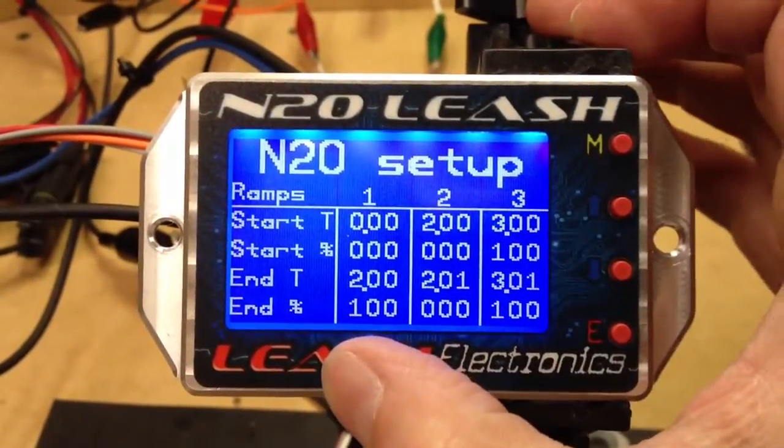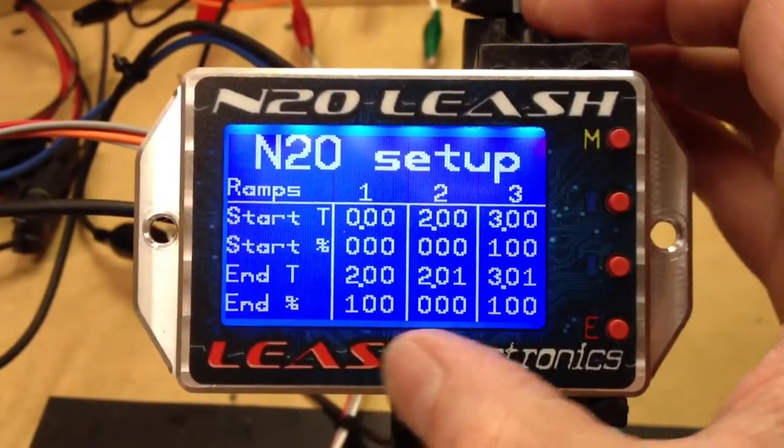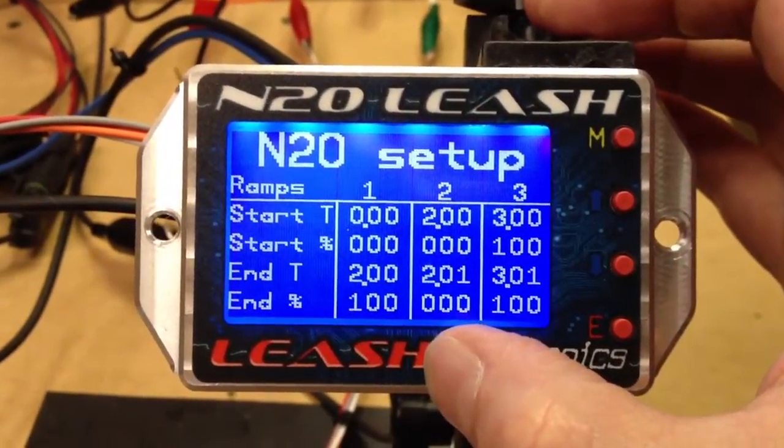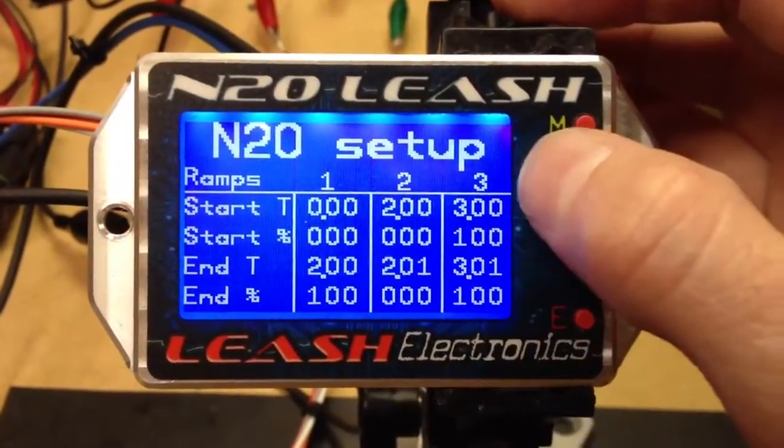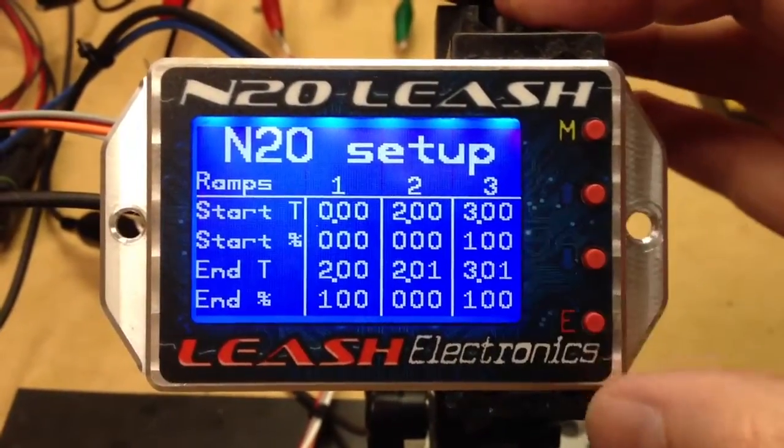The first ramp is going to go from 0 to 100% in 2 seconds. At 2 seconds, it's going to go to 0, so it's going to shut itself off. And then at 3 seconds, it's going to go 100% again.